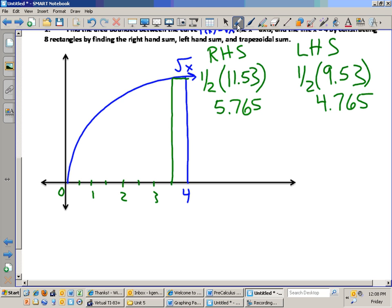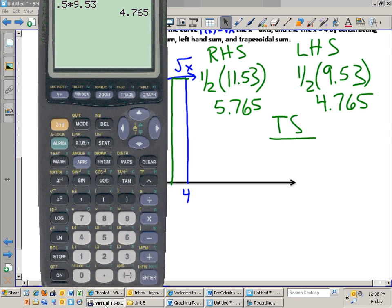How do you do a trapezoidal? So in order to do a trapezoidal sum, we average it, which is an extremely accurate result. 5.765 plus 4.765 divided by 2. No, we don't need it times the width. It's already been done. We already multiplied by the width up here. So 5.265.